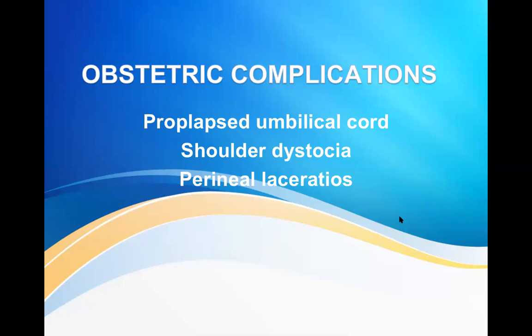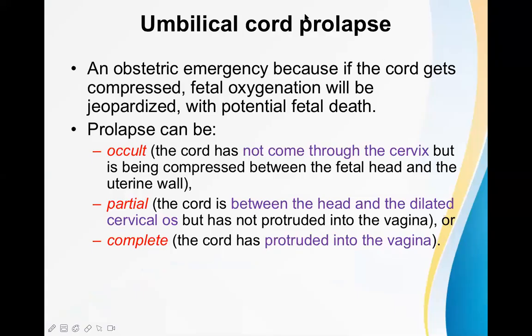Today I'm going to talk about some important obstetric complications — what complications can occur during the process of labor and delivery and how we handle these situations. Under this topic, three important problems we are going to discuss: prolapse of the umbilical cord, shoulder dystocia, and perineal laceration. These are the common obstetric complications.